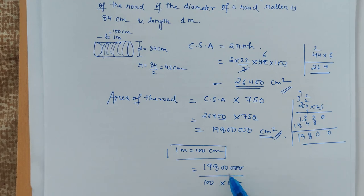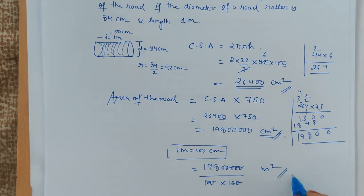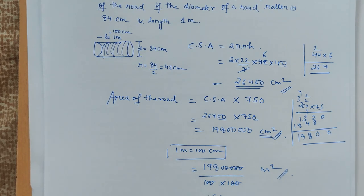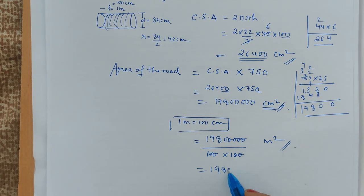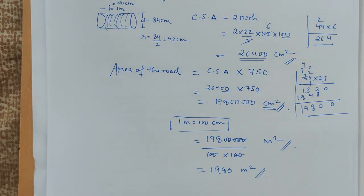This zero just gets cancelled with this, and these two zeros can cancel with this. And now the solution is in meter square: 1,980 meter square.